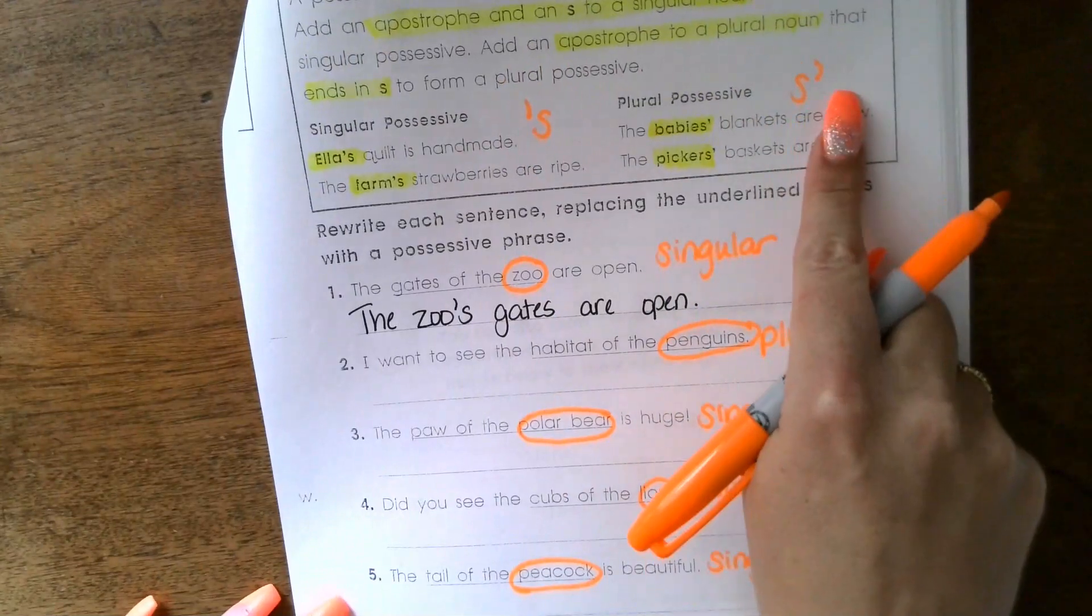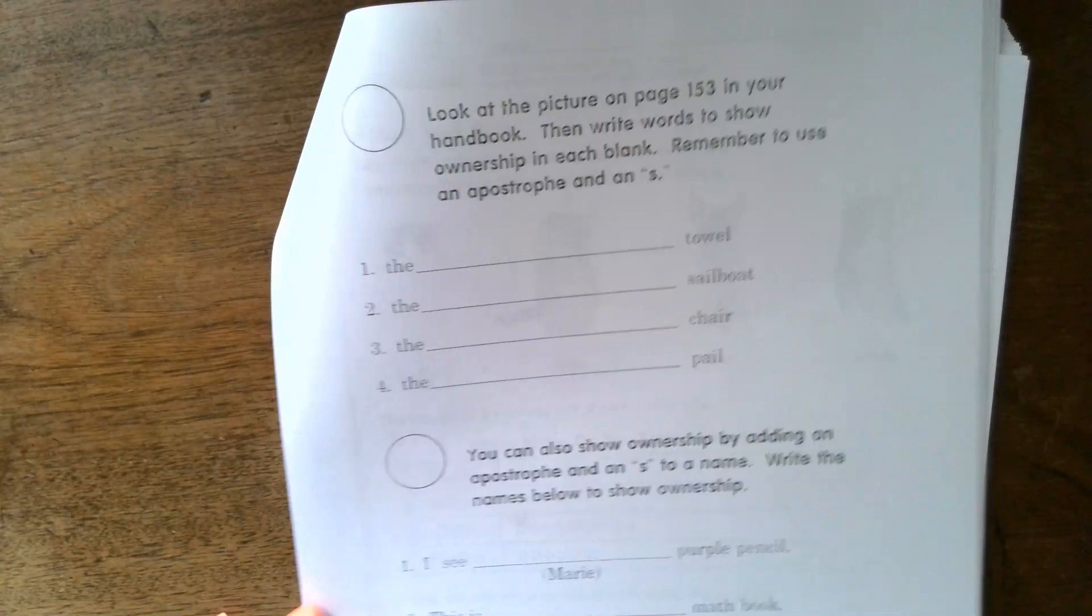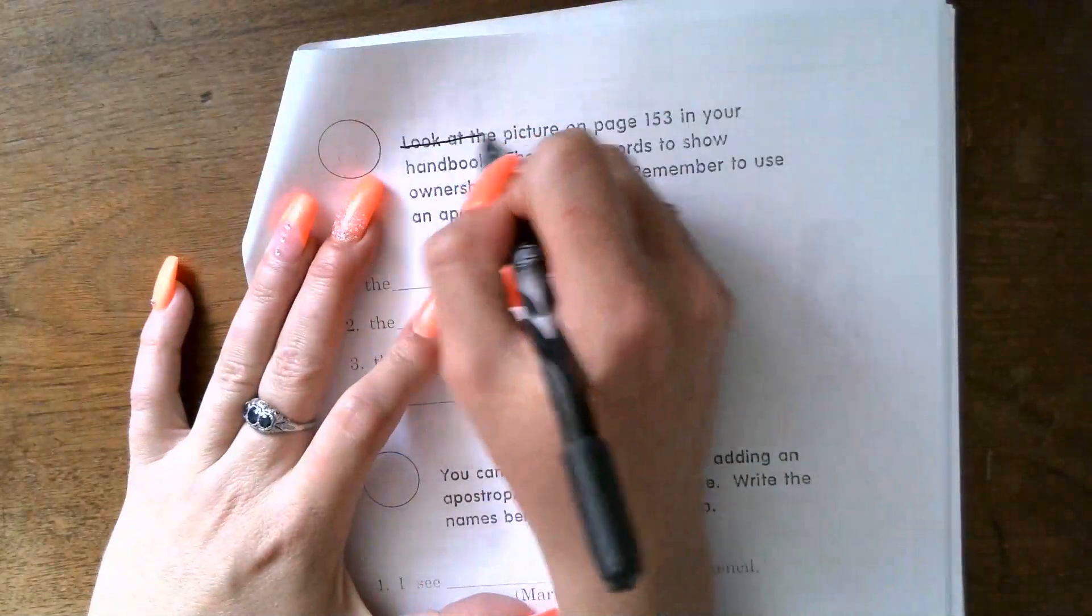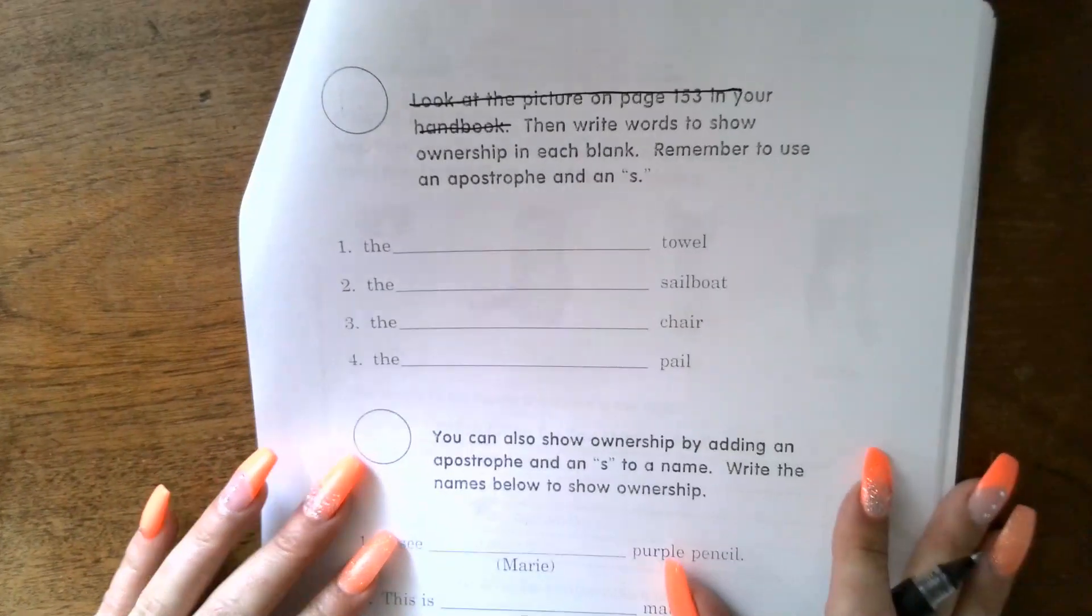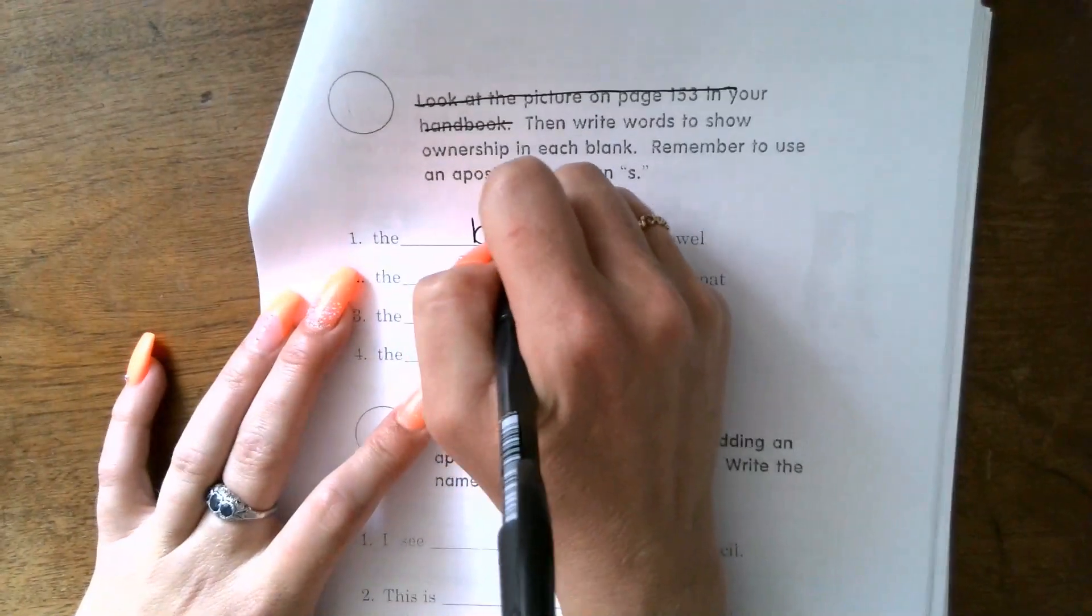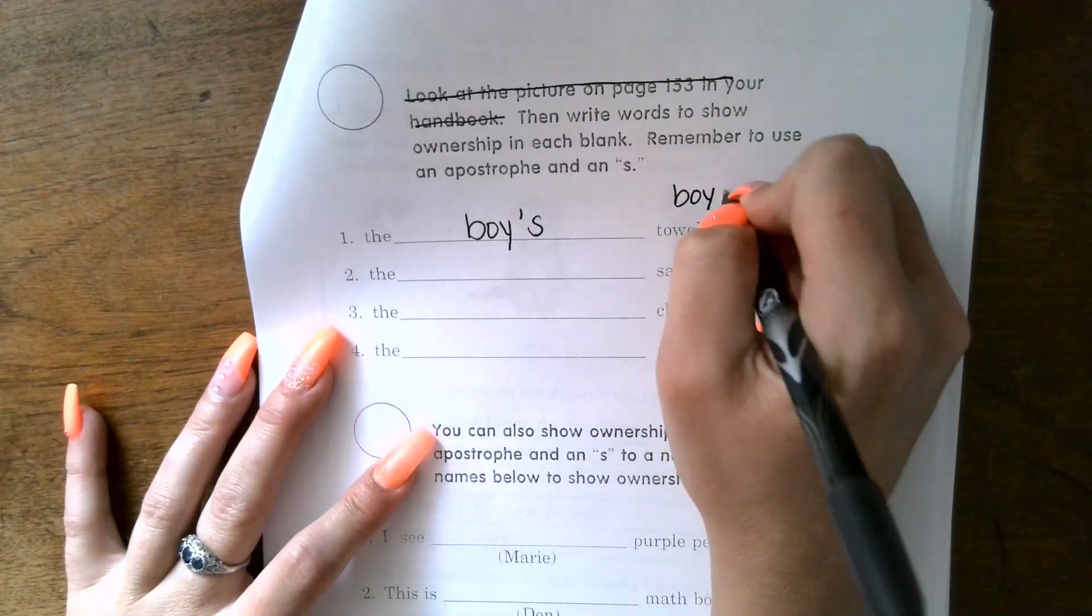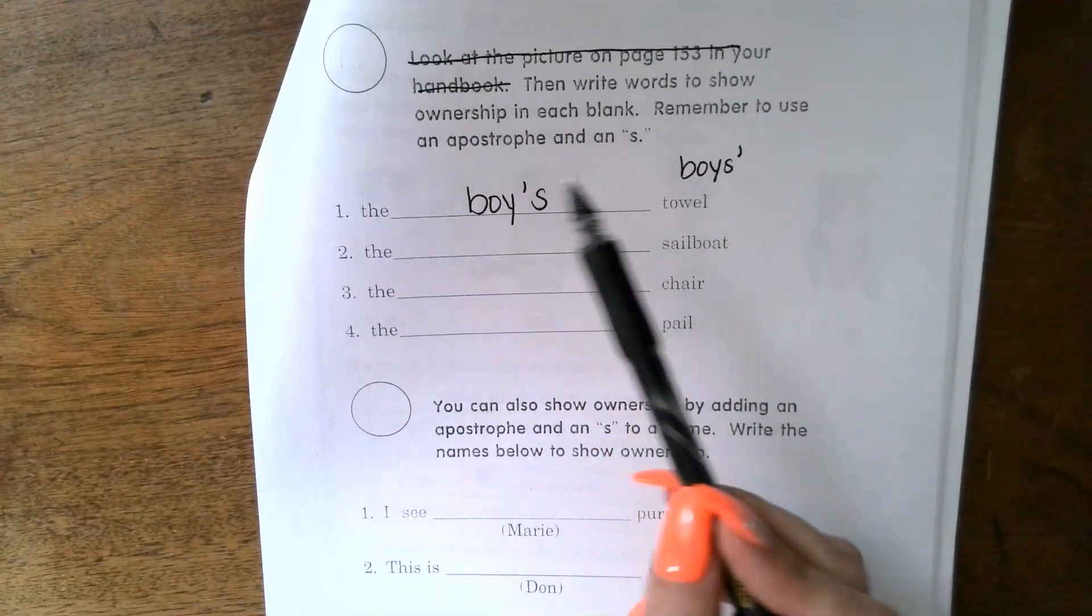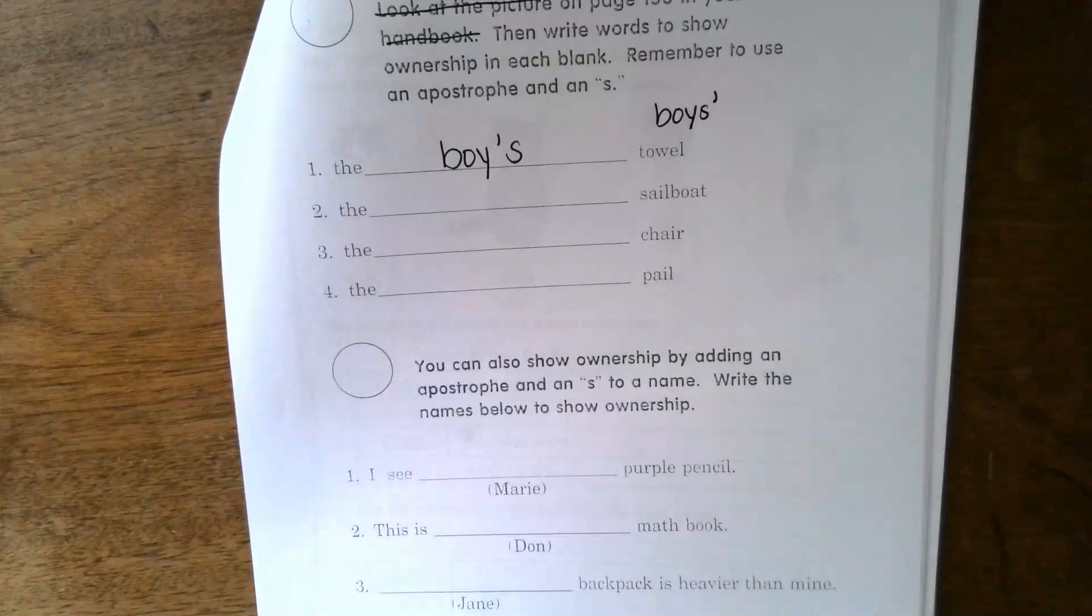Turning the page, we're continuing on with grammar. It says look at the picture on page 153 in your handbook, then write the words to show ownership in each blank. Remember to use an apostrophe and add an S. So what we're going to do is just cross those off. You can just fill in a noun that would show ownership here. The blank towel - we could say 'the boy's towel' in here. I'm only talking about one boy. If I wanted to talk about more than one boy, I could say 'the boys' towel.' Either one of those would be correct, although the directions do say you want to use an apostrophe and an S. It doesn't give you what order to use them in, so you can use either a singular or a plural noun there. You'll do two through four alone.